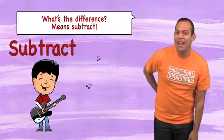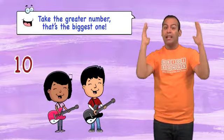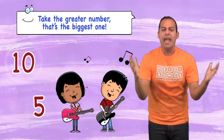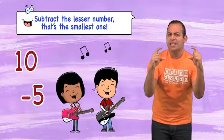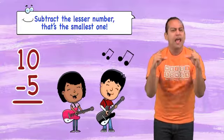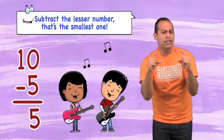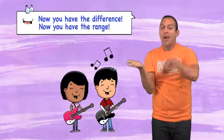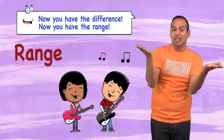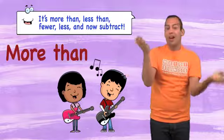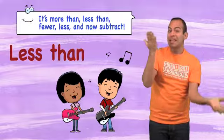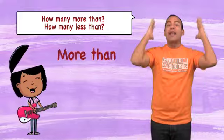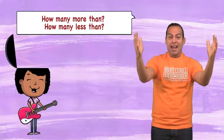Take the greater number — that's the biggest one. Subtract the lesser number — that's the smallest one. Now you have the difference, now you have the range. It's more than, less than, fewer left — and now subtract.